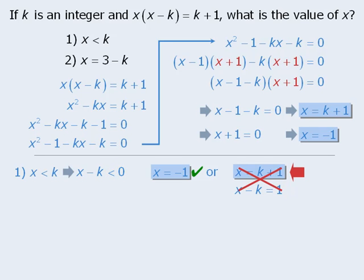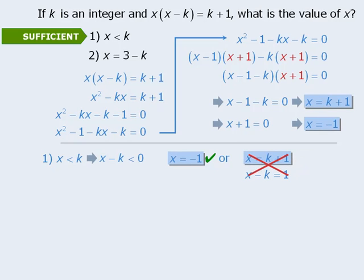This leaves us with only one possible value for x. X must equal negative 1. So, as such, statement 1 must be sufficient.